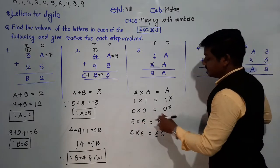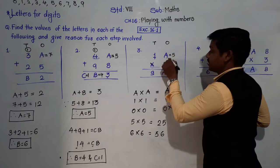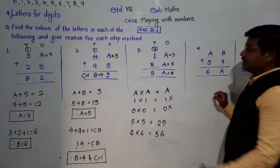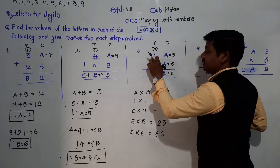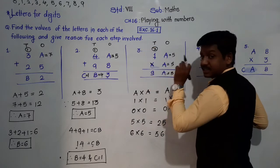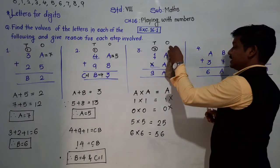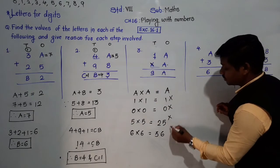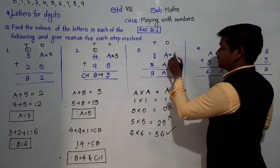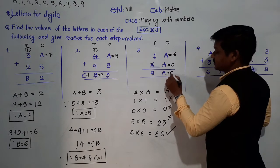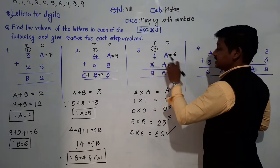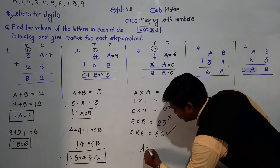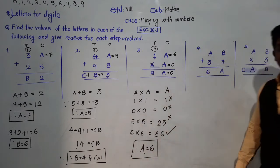The only remaining combination is A = 6. 6 × 6 = 36 — 6 comes down, 3 carried. Then 6 × 1 = 6 + 3 = 9. That matches! So A is equal to 6.